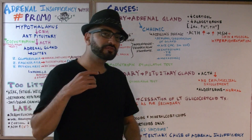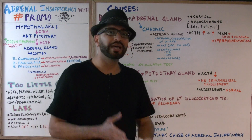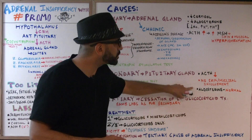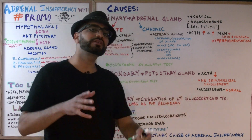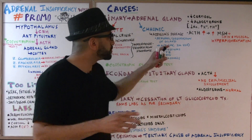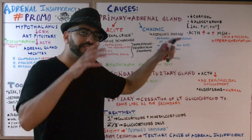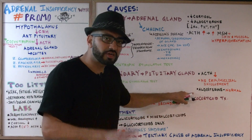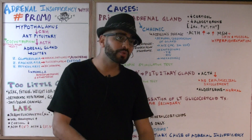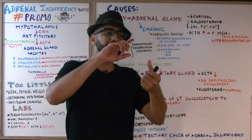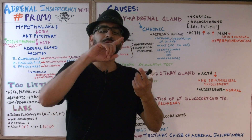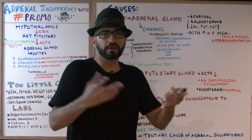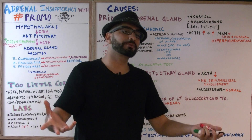In secondary adrenal insufficiency, aldosterone levels will be normal because aldosterone is not under the control of ACTH. That's why the labs differ: sodium levels will be normal/high, potassium levels will be normal/low, and hydrogen ions will be normal — unlike the electrolyte abnormalities seen in primary adrenal insufficiency.